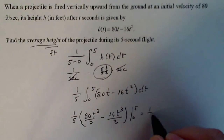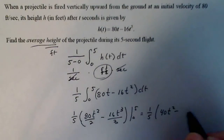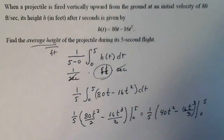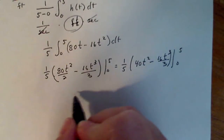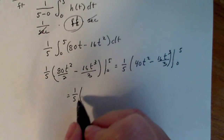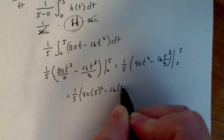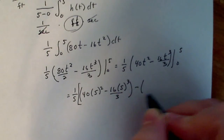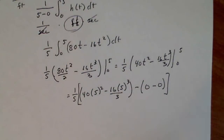That equals one-fifth times 40t squared minus 16t cubed over three, from zero to five. Using the fundamental theorem, I get one-fifth times 40 times five squared, minus 16 times five cubed over three, minus the terms with zero — which are all zero, so we have a nice set of zeroes there.